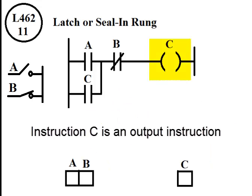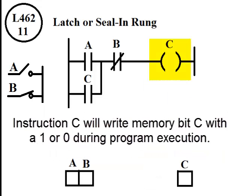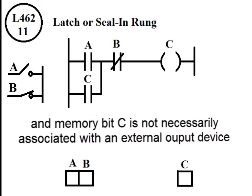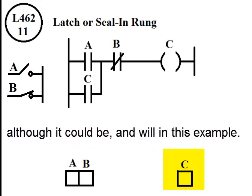Instruction C is an output instruction. An output instruction is placed on the right side of the rung. Instruction C will write memory bit C with a 1 or 0 during program execution. And memory bit C is not necessarily associated with an external output device, although it could be and will in this example.